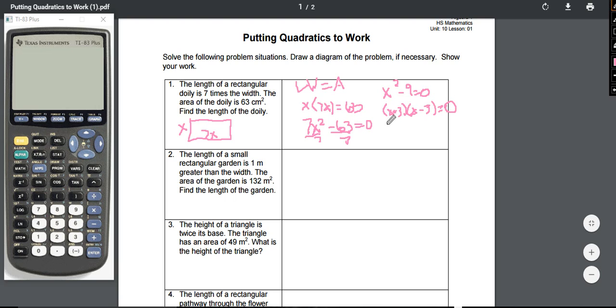Then you set each factor equal to zero. So we have x minus three equals zero and x plus three equals zero. We're going to add three to both sides, we get x equals three. And over here we get x equals negative three.